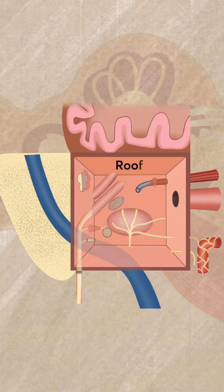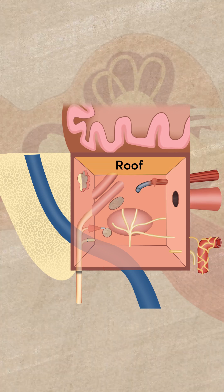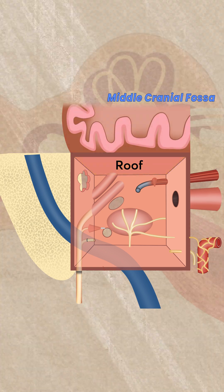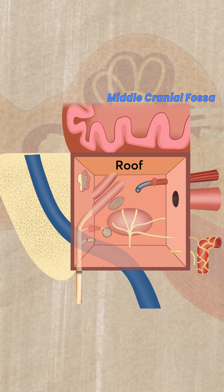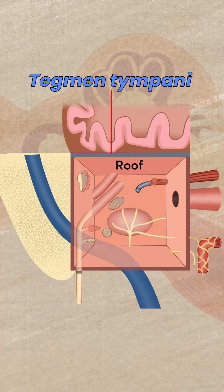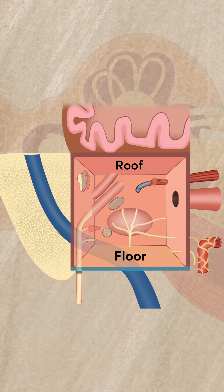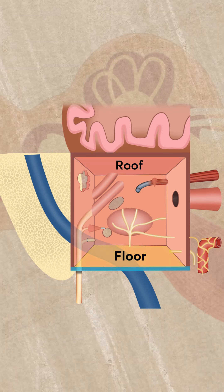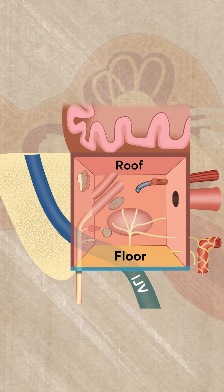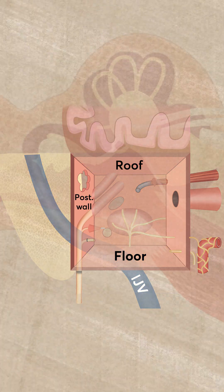We have got the roof of the middle ear, which separates the middle ear from the middle cranial fossa above. This roof is formed by a thin plate of bone which is called the tegmen tympani. Then we have got the floor — the floor of the middle ear is again formed by a thin plate of bone which separates the middle ear from the internal jugular vein.